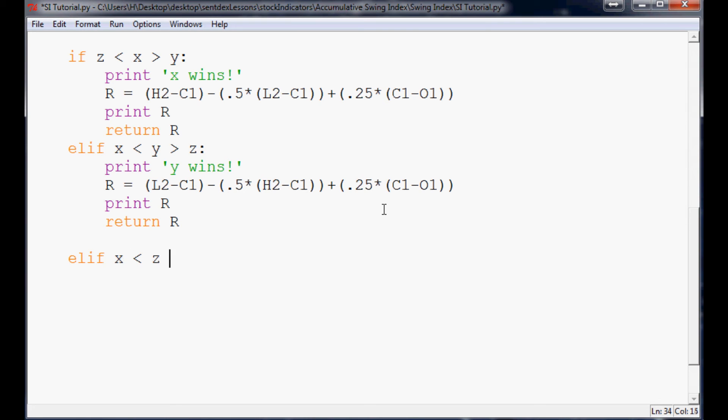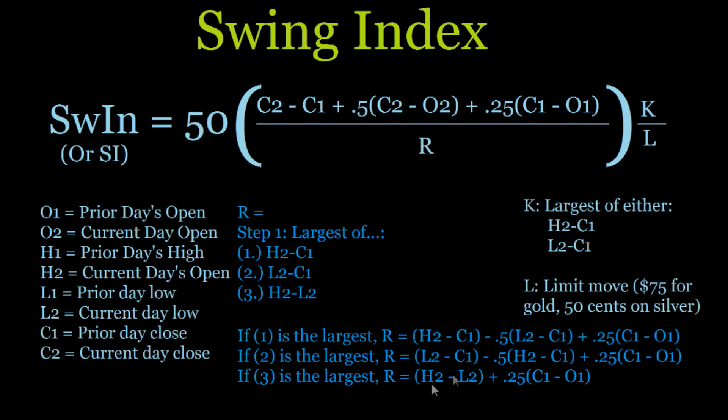And this time, if X is less than Z, yet Z is greater than Y, well, print Z wins. And if Z wins, R is equal to H2 minus L2 plus 0.25 times C1 minus O1. And let's consult the image, make sure that's correct. H2 minus L2 is equal to H2 minus L2. Yes. Okay. So we've done that part right. So now, at this point, we should have a fully functional calculation of R.